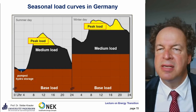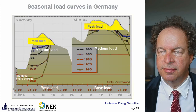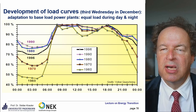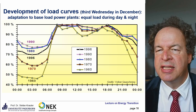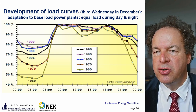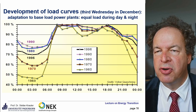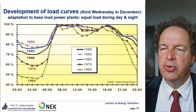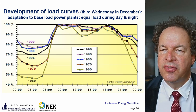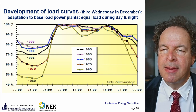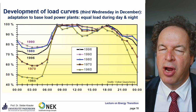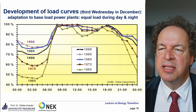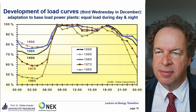The left part shows a typical summer day; the right shows a typical winter day. To maximize profit with baseload plants, consumption patterns were altered. In the 60s people slept at night using little energy; during the day consumption was much higher. Electricity companies offered special night tariffs, encouraging night-time electric heating. This significantly increased night-time consumption and flattened the load curve, enabling better use of baseload plants.